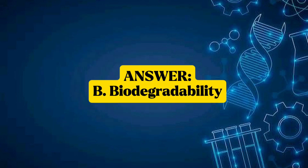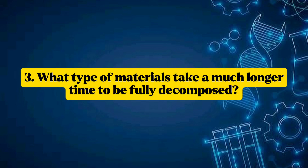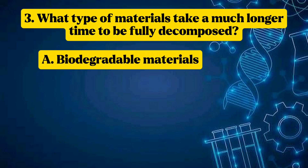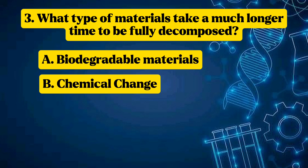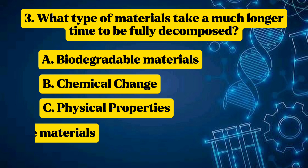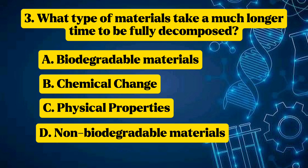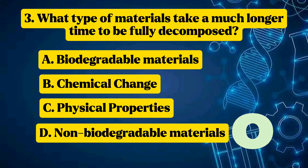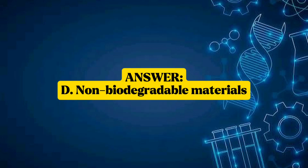Question 3: What type of materials take a much longer time to be fully decomposed? Options: A — biodegradable materials, B — chemical change, C — physical properties, D — non-biodegradable materials. Answer: D — Non-biodegradable materials.